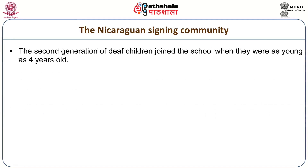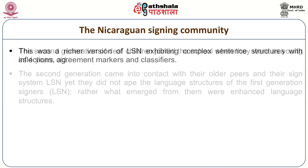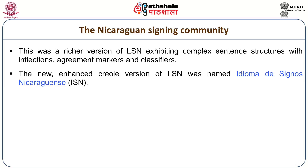A second generation of deaf children joined the school when they were as young as 4 years old. They came into contact with their older peers and their signing system, LSN. What emerged from them was a richer version of LSN exhibiting complex sentence structures with inflections, agreement markers, and classifiers. This new enhanced creole version was named Idioma de Signos Nicaragüense (ISN).